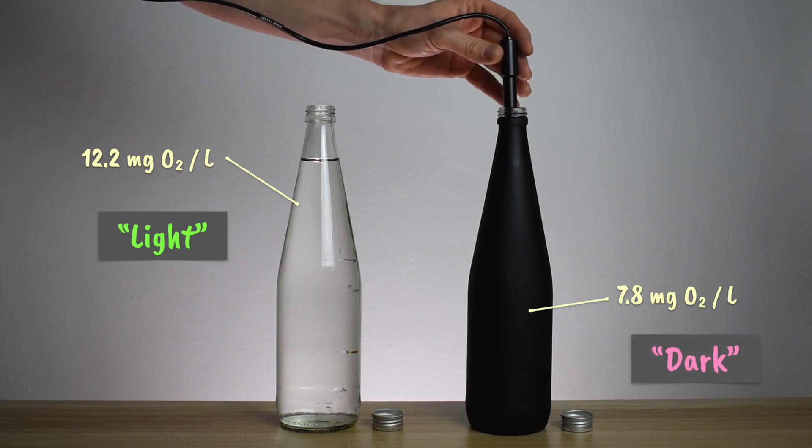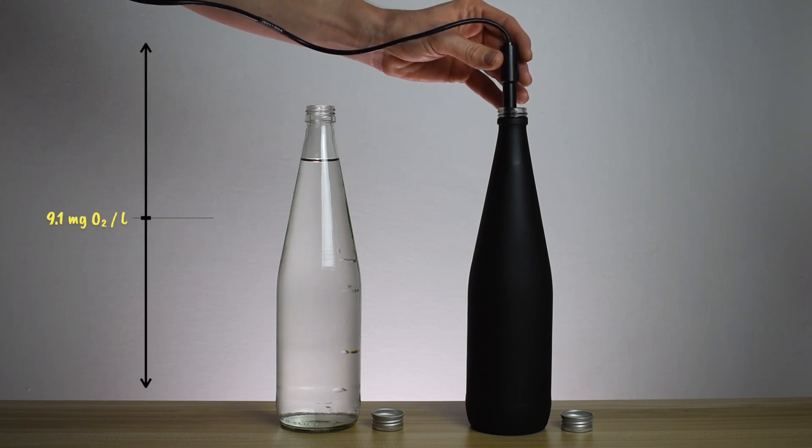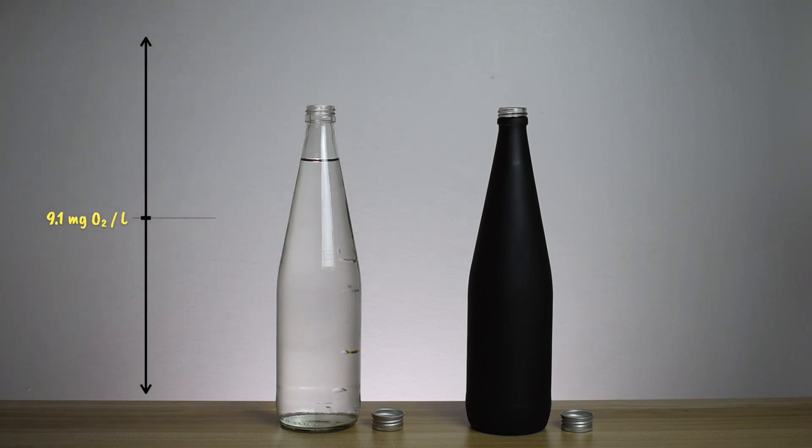So, we had an initial oxygen level in the bottles of 9.1. Oxygen was produced by photosynthesis, but also used by respiration, and we've measured 12.2. So, the change, 3.1 milligrams of oxygen per litre, per 24 hours, reflects the net primary productivity.